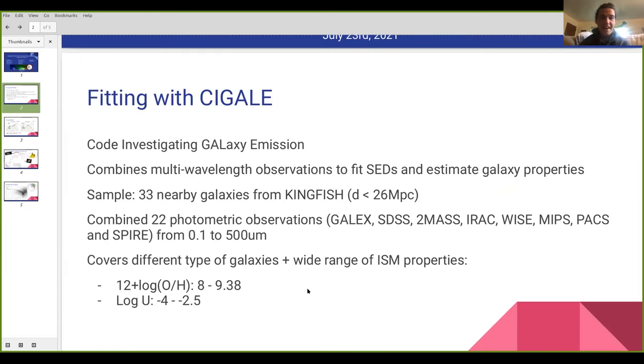The code that we're using for SED fitting is called CIGALE, or Code Investigating Galaxy Emission. It combines multi-wavelength observations from the UV all the way to the far infrared in order to fit to model SEDs and then estimate galaxy properties from that.